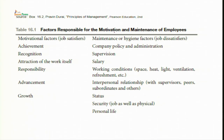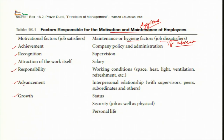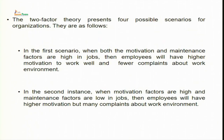Motivational factors — which are job satisfiers — include achievement, recognition, attraction of work itself, responsibility, advancement, and growth. Hygiene or maintenance factors — which are job dissatisfiers if absent — include company policy, administration, supervision, salary, working conditions, interpersonal relations, status, security, and personal life. These two factors present four possible scenarios: when both motivation and maintenance factors are high, employees have higher motivation and fewer complaints; when motivation is high but maintenance is low, employees have higher motivation but many complaints; when motivation is low and maintenance is high, employees have lower motivation but fewer complaints; and when both are low, employees have low motivation and tend to quit.